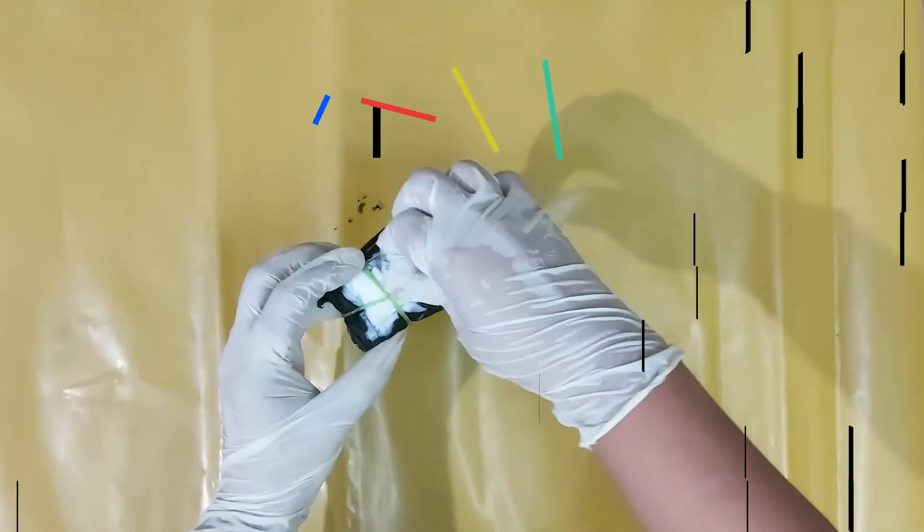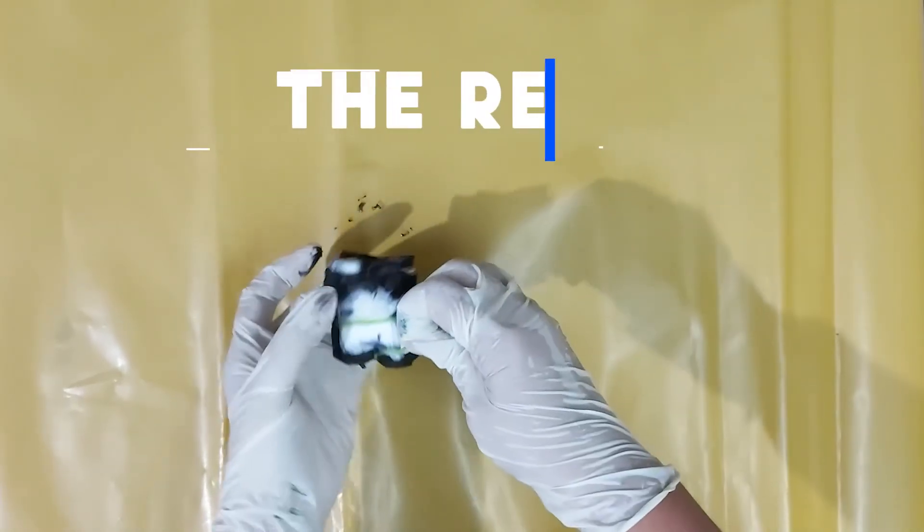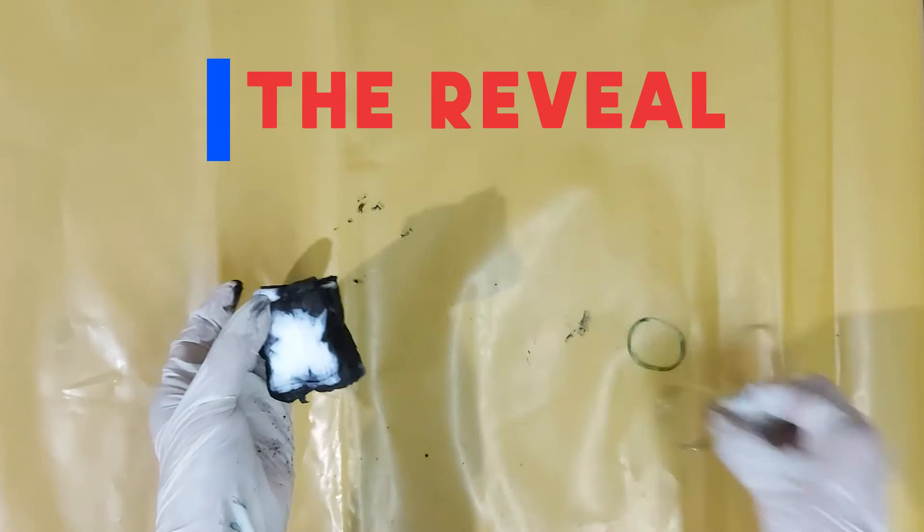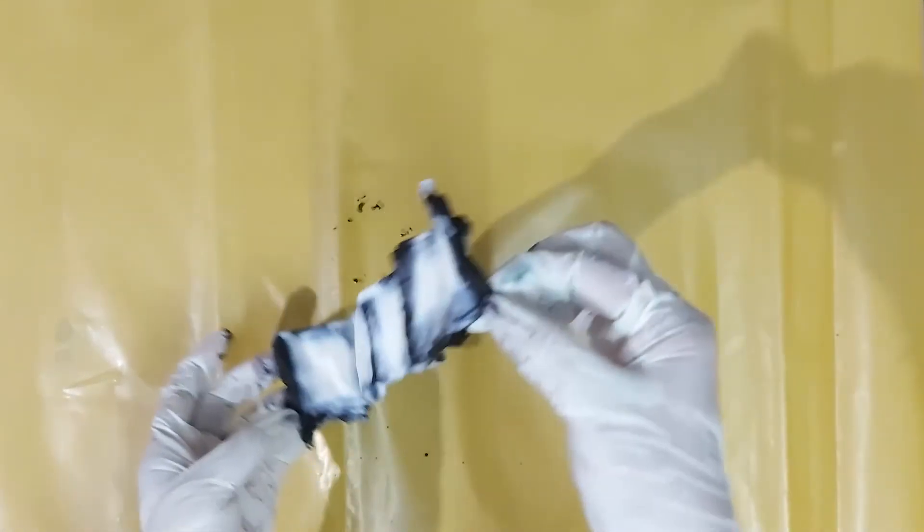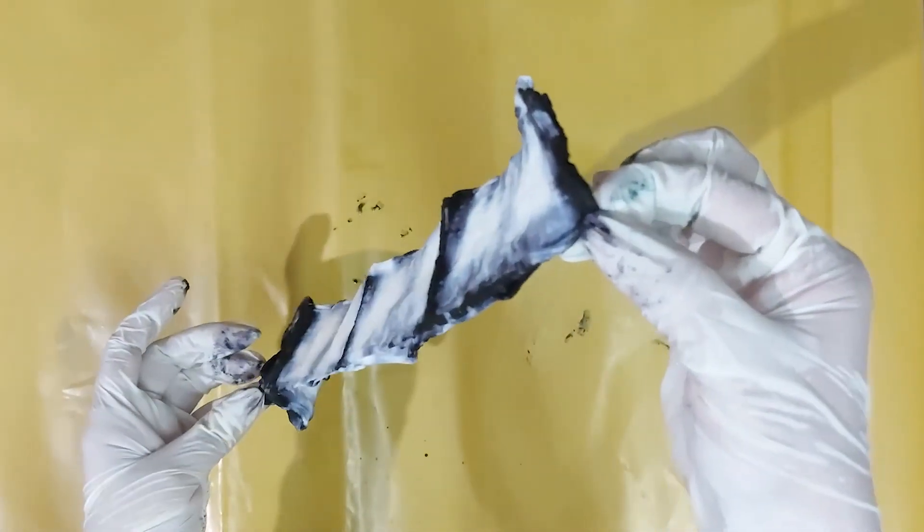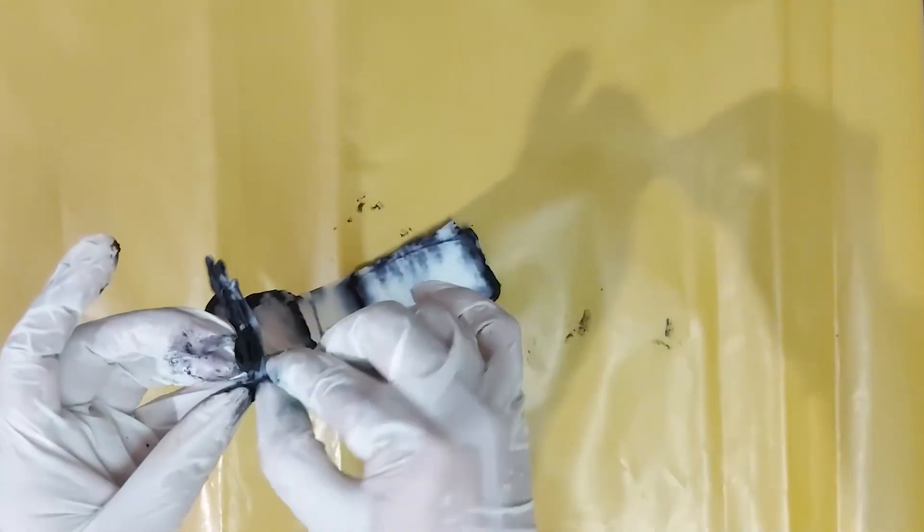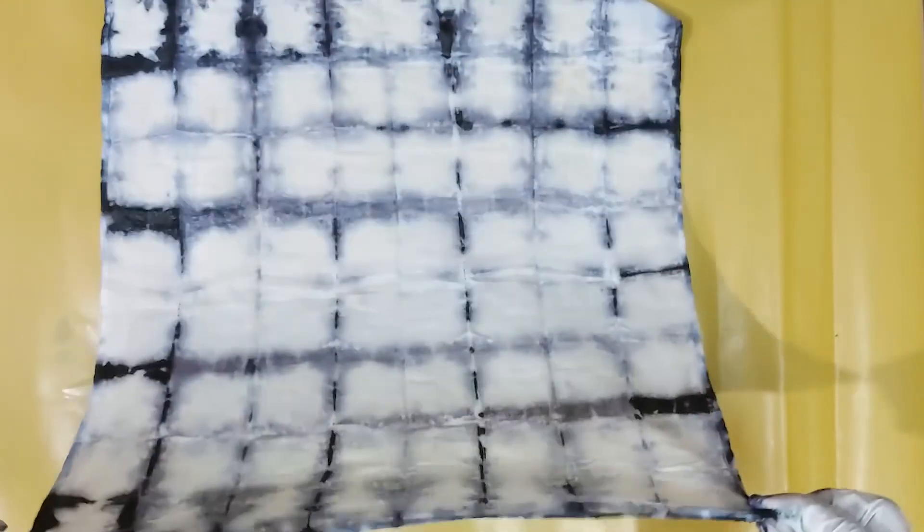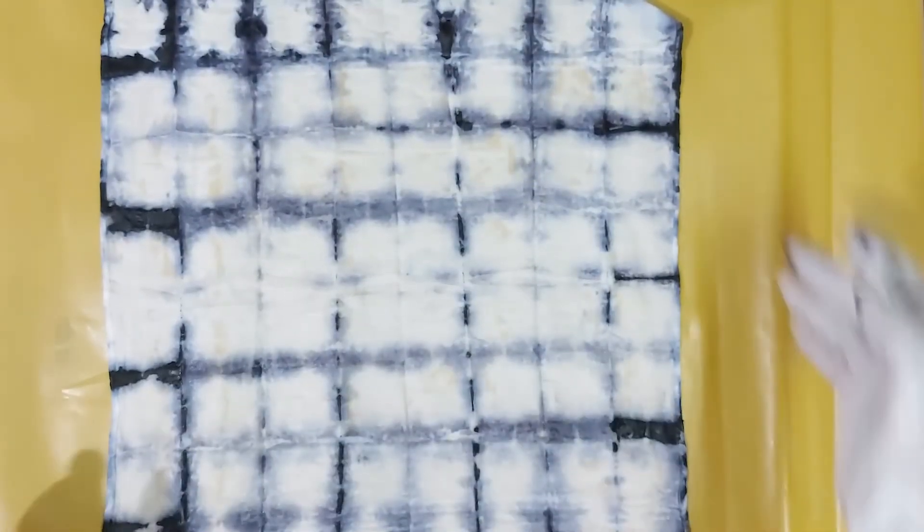Once your dye has fully processed, remove the rubber bands and check your patterns. Look at this beautiful shibori style pattern. Now let this dry completely and then you can rinse it in plain water and allow it to dry.